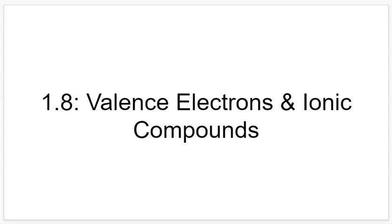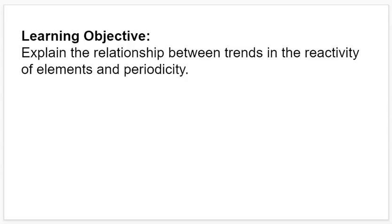Hello AP Chemistry students. We're now at section 1.8 on valence electrons and ionic compounds. This is going to be the last section of the unit. Our learning objective here is to explain the relationship between trends in the reactivity of elements and periodicity, so we're going to be leaning on a lot of the concepts that we learned in the last few slideshows.